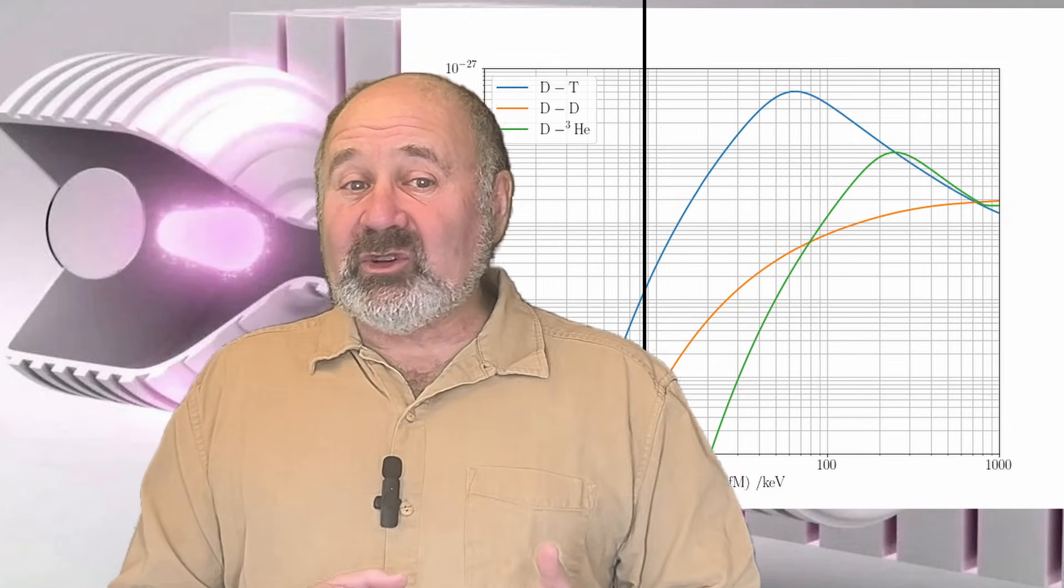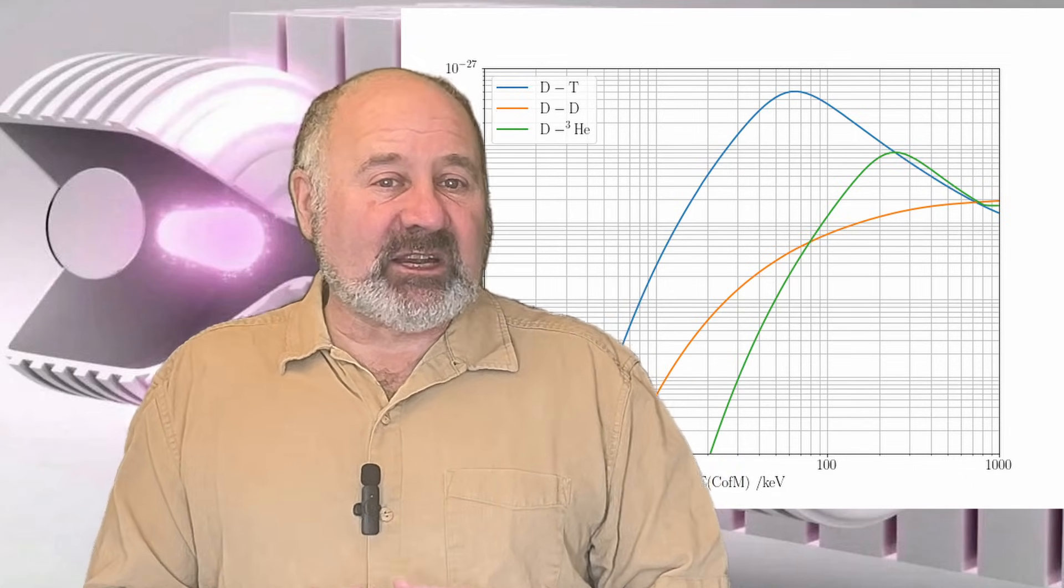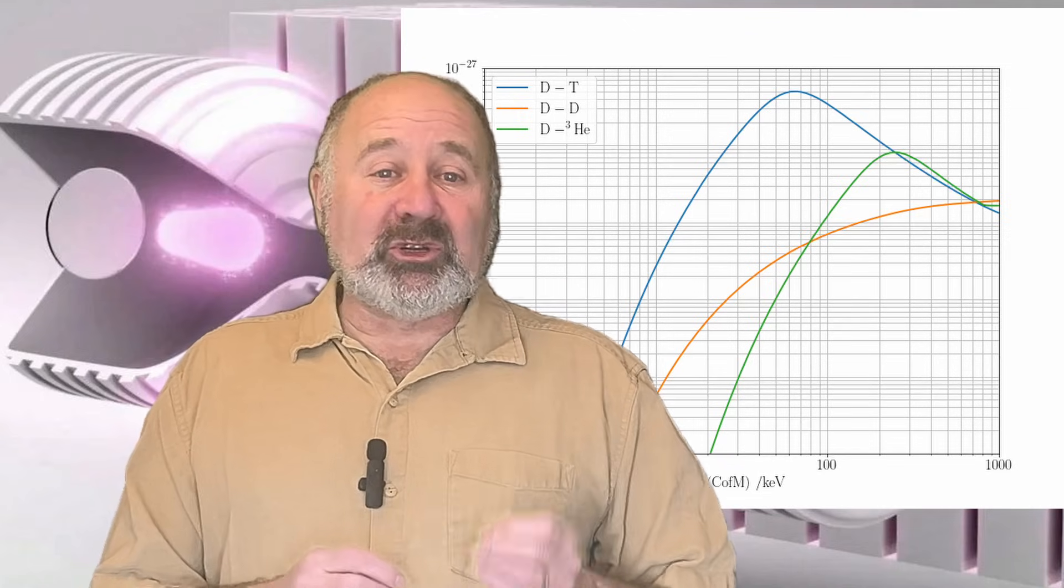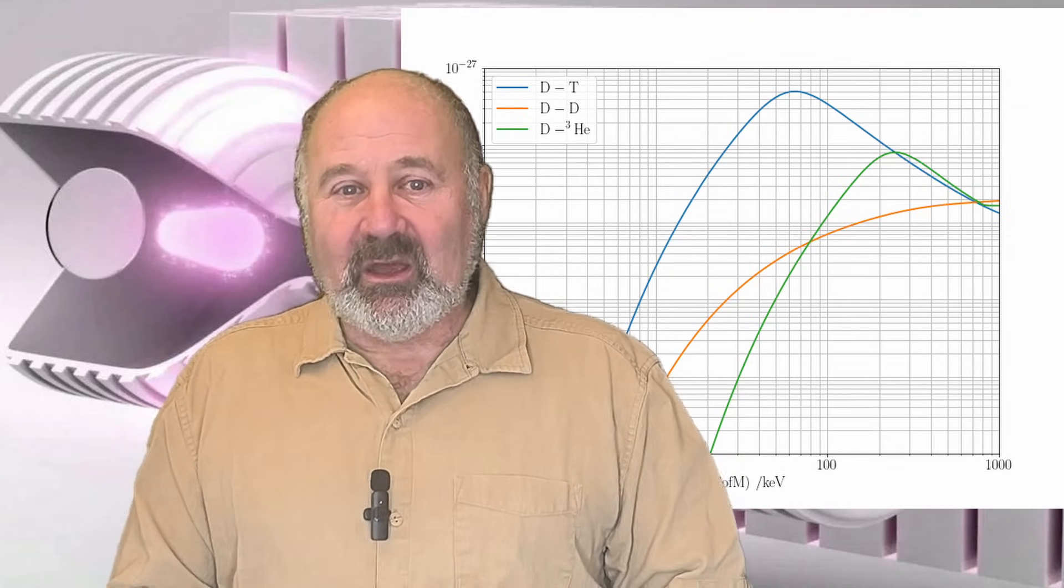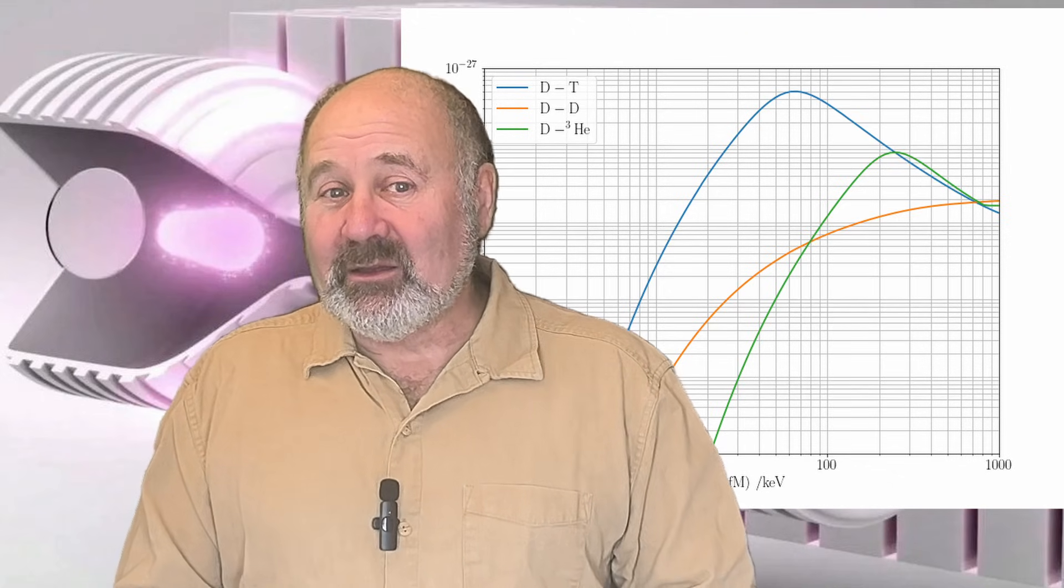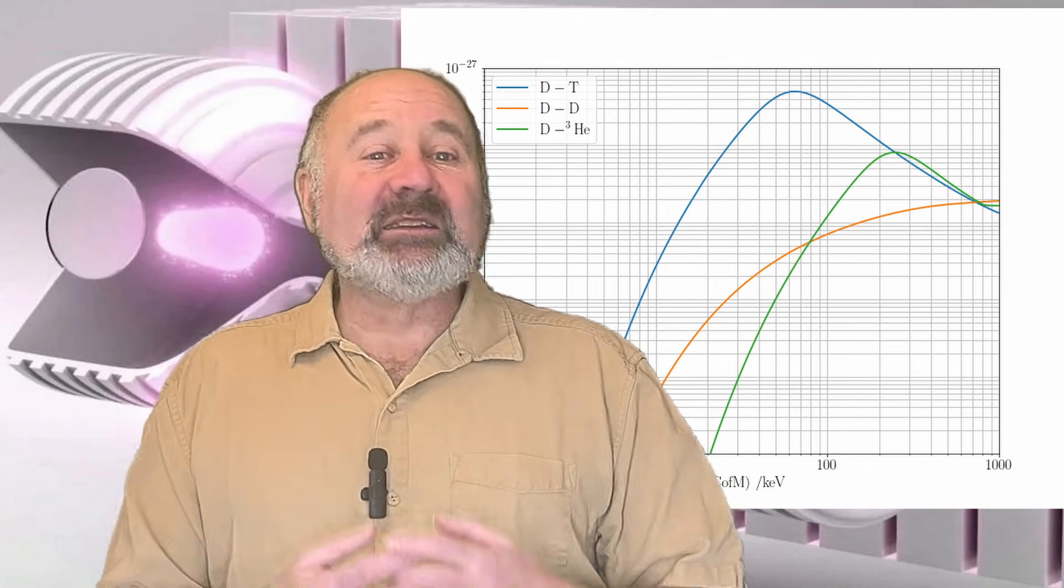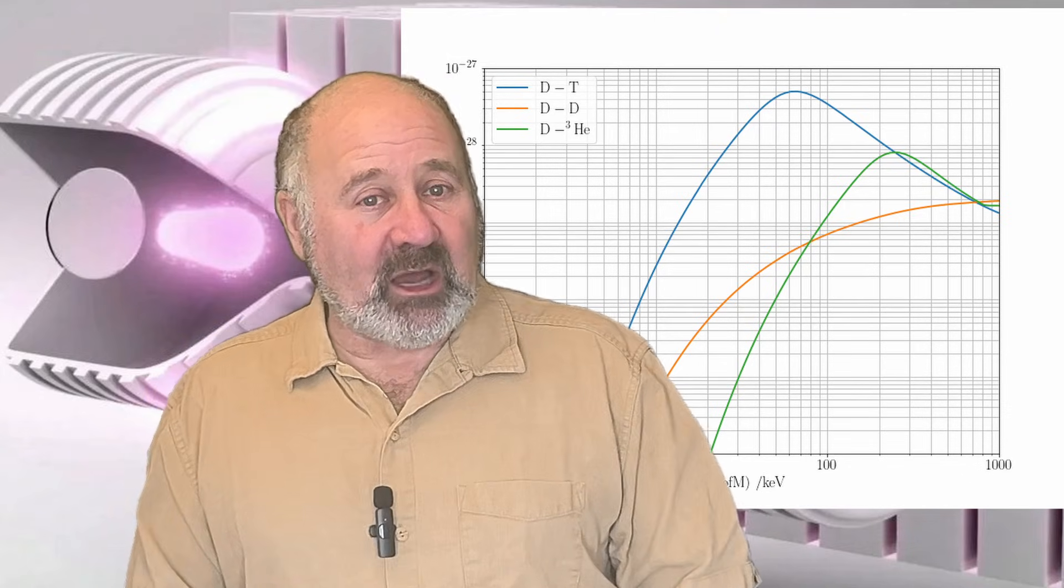Immediately, you can see that the energies that can be obtained, the DT and DD cross-sections, are much higher than the deuterium-helium-3 cross-section because both of the forms of hydrogen have a single proton. The deuterium-helium-3 reaction is fighting against twice the repulsion since helium has two protons.